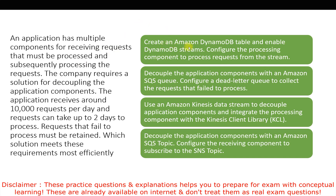The options are: first, create an Amazon DynamoDB table, enable DynamoDB Streams, and configure the processing component to process requests from the stream. Second, decouple the application components with an Amazon SQS queue and configure a Dead Letter Queue to collect requests that failed to process. Third, use an Amazon Kinesis Data Stream to decouple application components and integrate with the Kinesis Client Library (KCL). Fourth, decouple application components with an Amazon SNS topic and configure the receiving component to subscribe to the SNS topic.